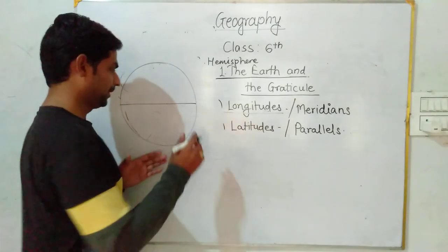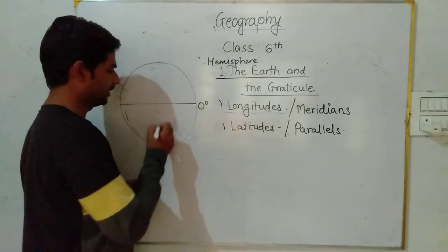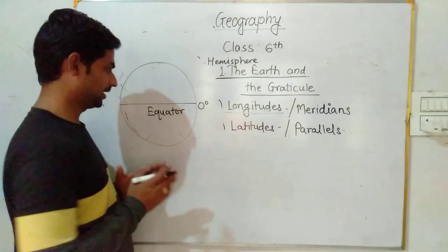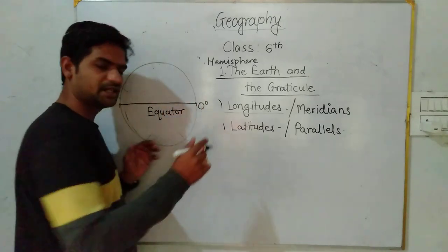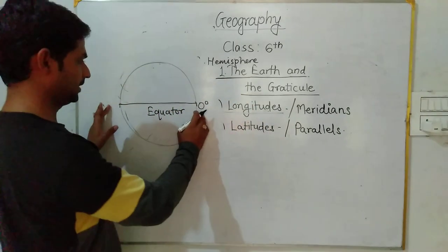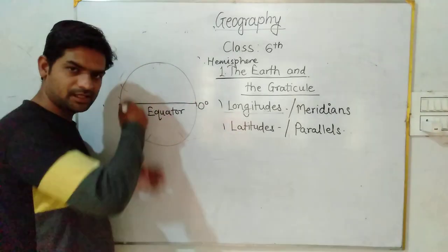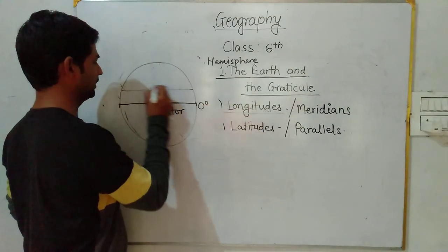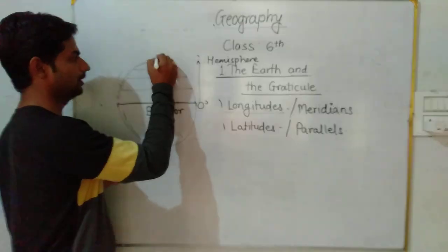From the middle of the earth, this is the diameter of the earth and this is marked as zero degree. This diameter is also called the equator. Equator is also called the largest parallel on the earth. Equator is the largest parallel. Why? Because the shape of the earth is spherical — spherical means rounded.